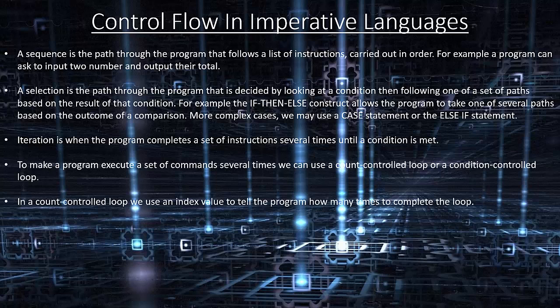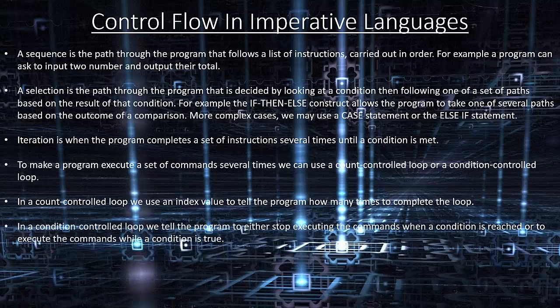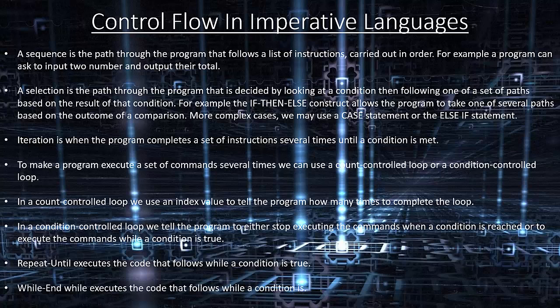In a count-controlled loop we use an index value to tell the program how many times to complete the loop. In a condition-controlled loop we tell the program to either stop executing commands when the condition is reached, or to execute commands while a condition is true. Repeat-until executes the code while a condition is true. While executes the code that follows while a condition is met.